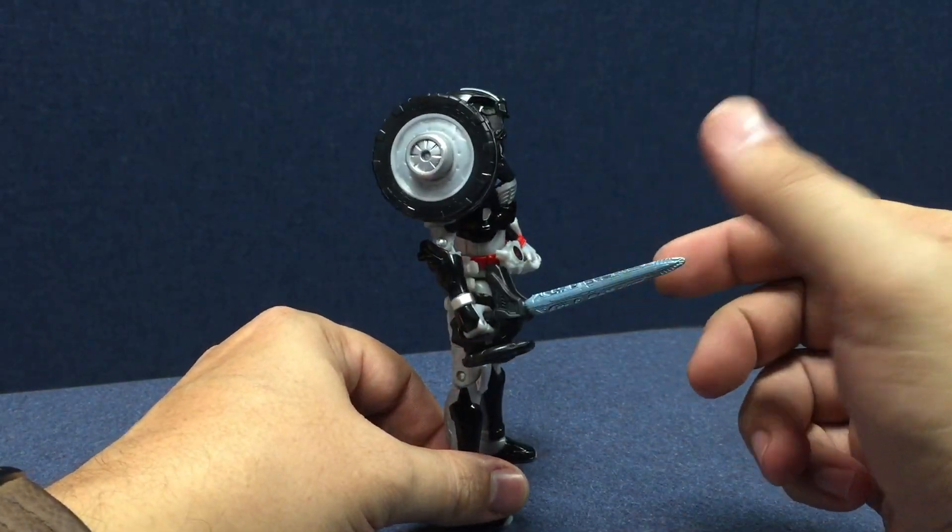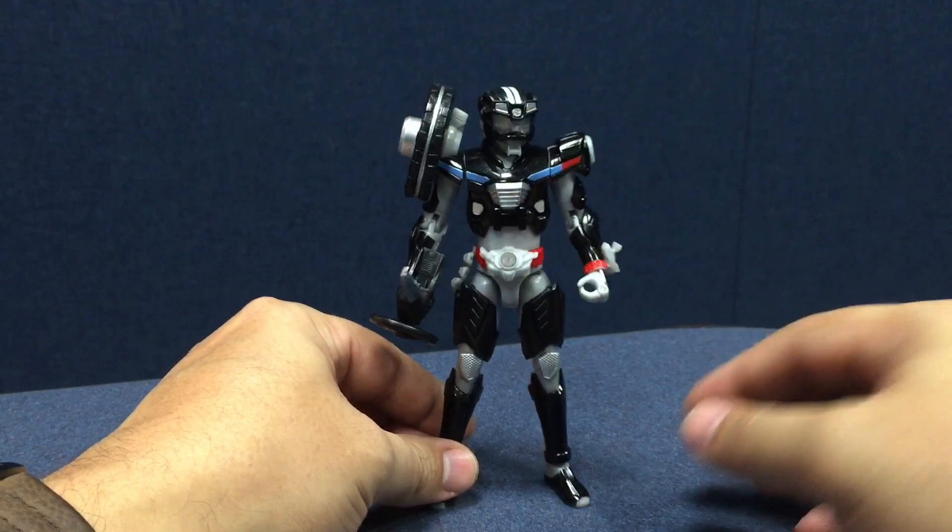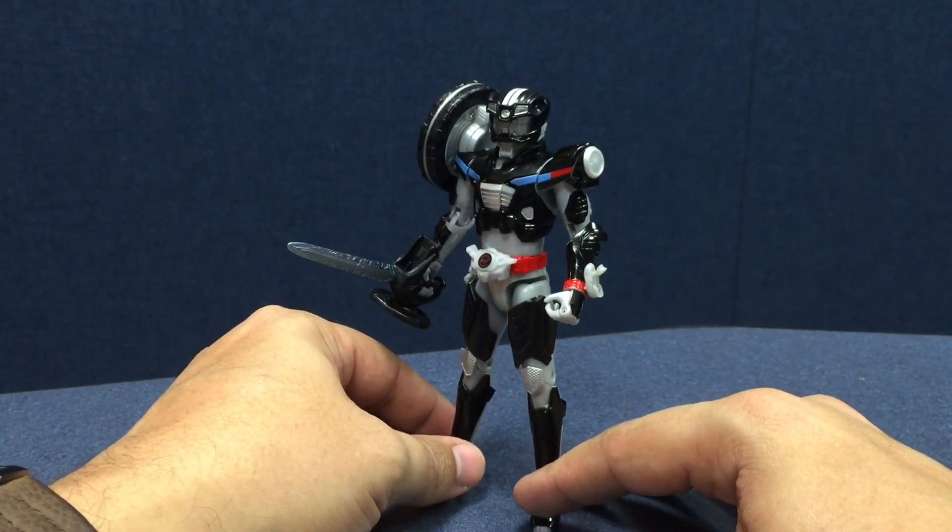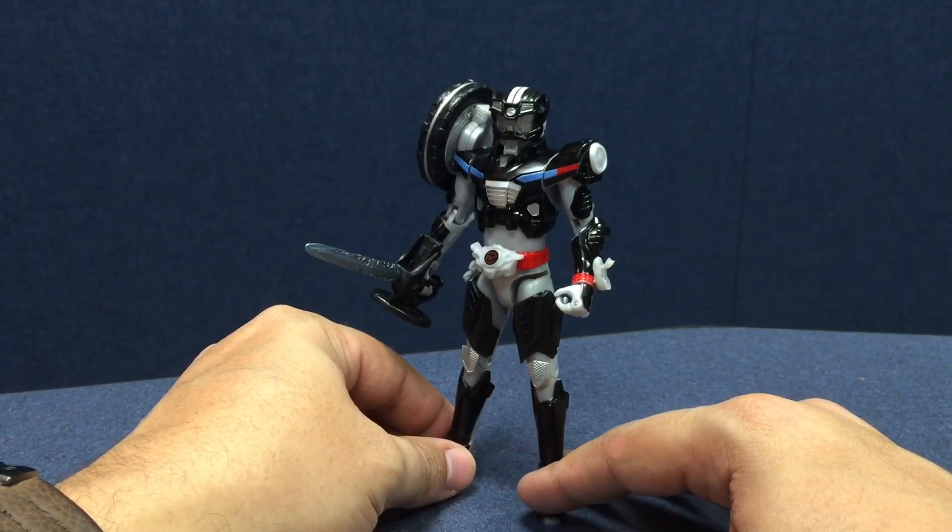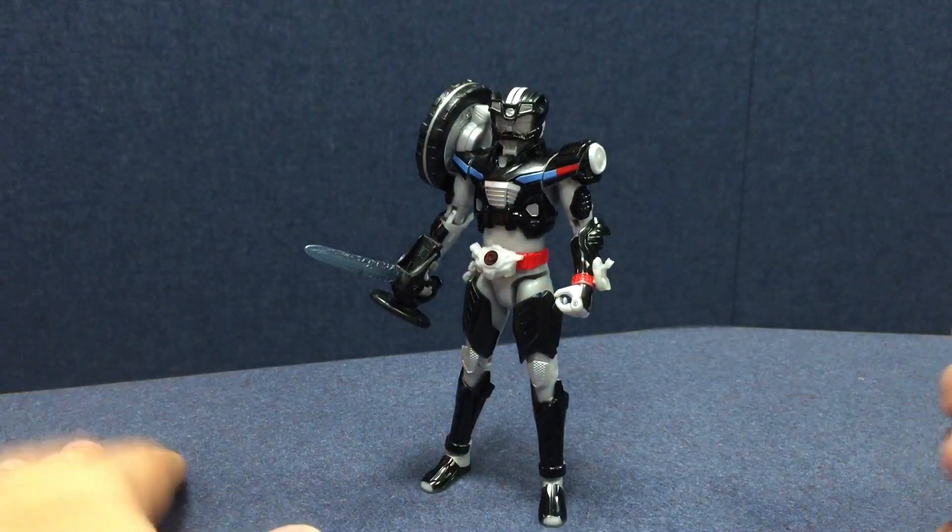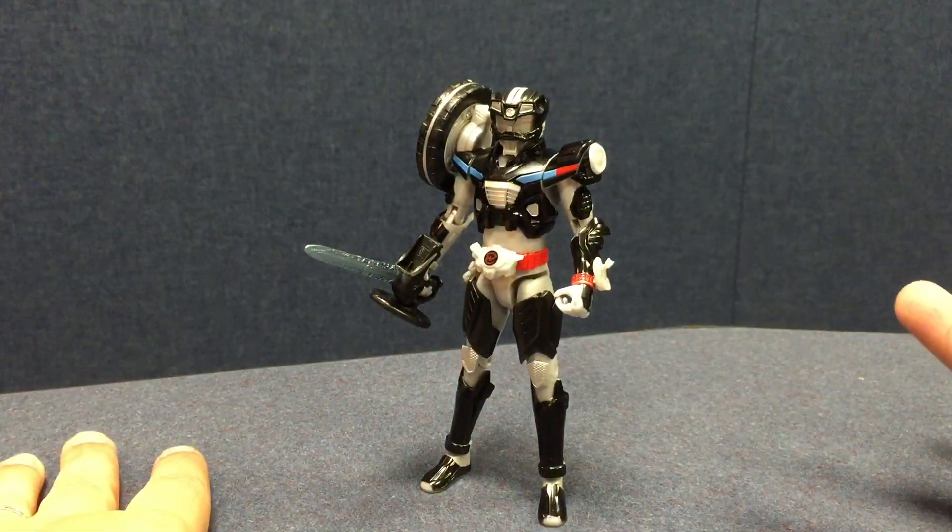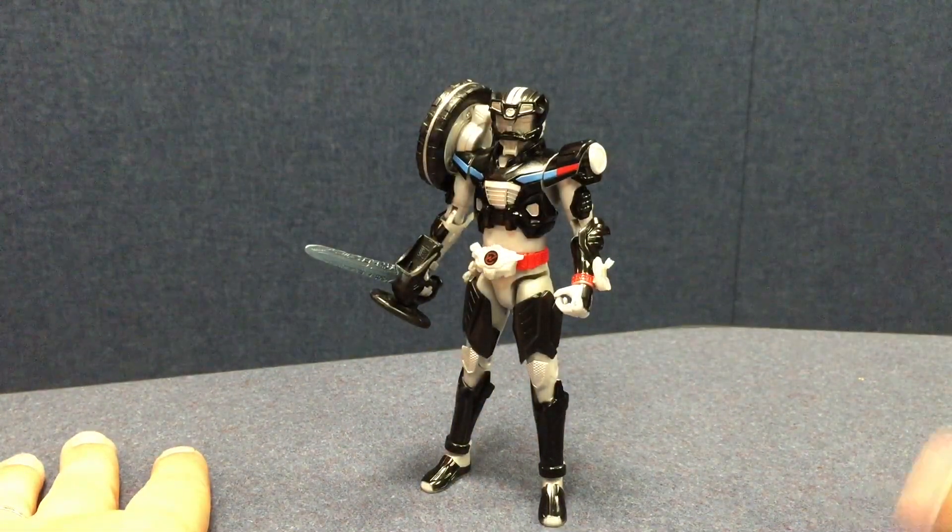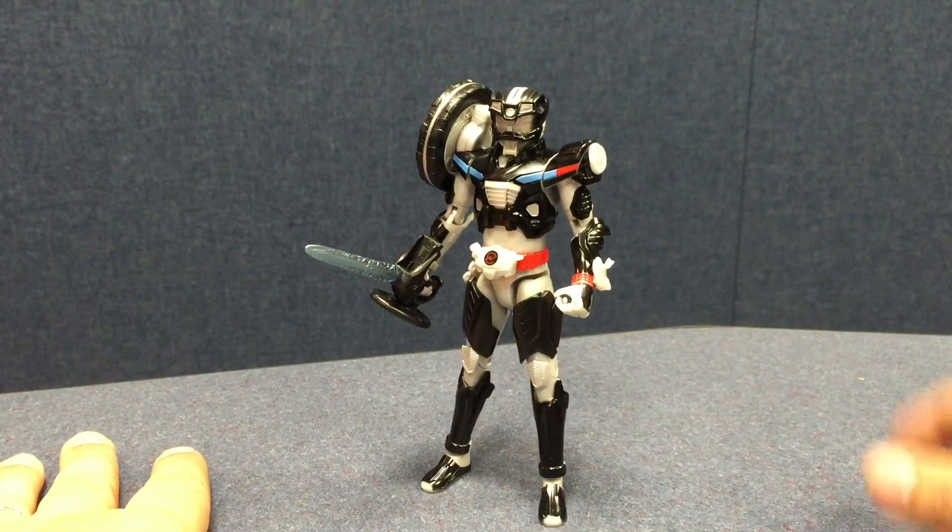He also comes with, I believe they're calling this the Handelken, the Steering Sword, whatever they're calling it. This is one that forms from a steering wheel. He does have a gun that forms from the door, but that hasn't come with a figure yet. Maybe it'll come with type technique. I don't know.